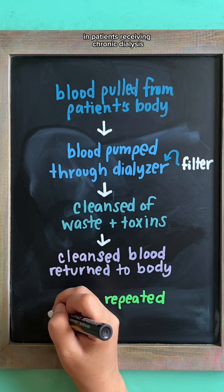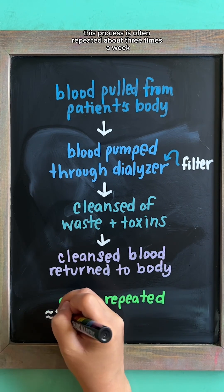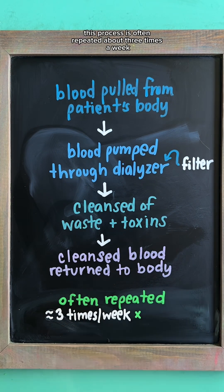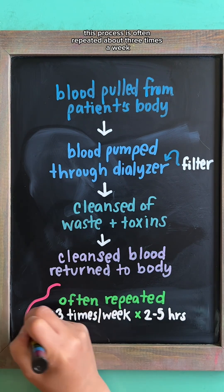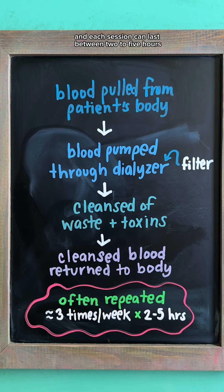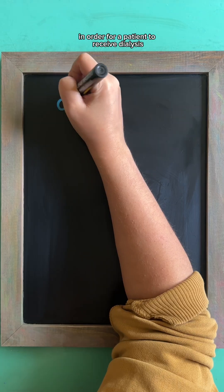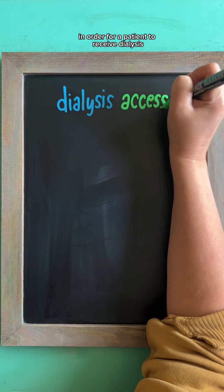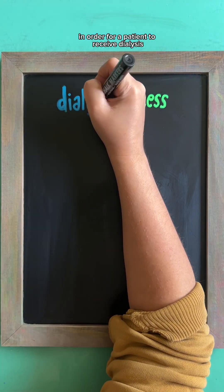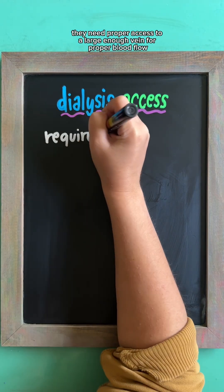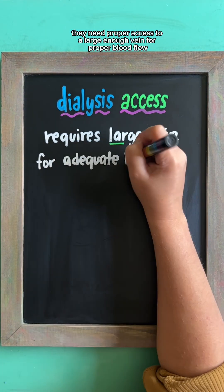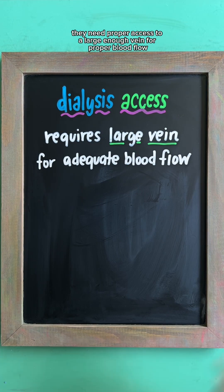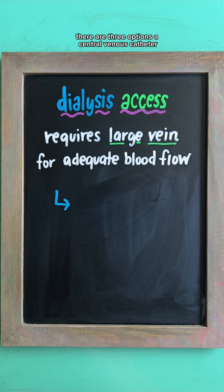In patients receiving chronic dialysis, this process is often repeated about three times a week, and each session can last between two to five hours. In order for a patient to receive dialysis, they need proper access to a large enough vein for proper blood flow. There are three options: a central venous catheter, an AV fistula, and an AV graft.